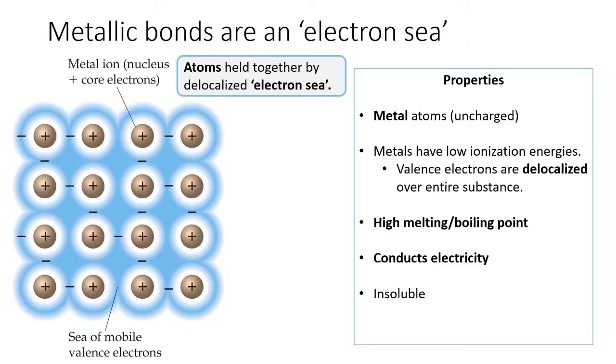Delocalized electrons are very stable, making these bonds quite strong, and metals have high melting and boiling points. The delocalized valence electrons can also conduct electricity. Because metals are uncharged and nonpolar, they do not dissolve in water.